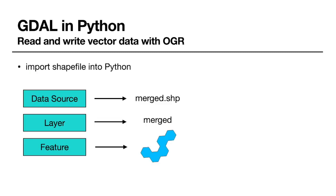One more thing before we start coding. Here you can see how a vector file is organized. When we open a shapefile in Python, we first access the data source — our merge shapefile. That data source stores a layer called 'merged', and we need to access this layer in order to access the individual polygon features for which we want to compute the perimeter.